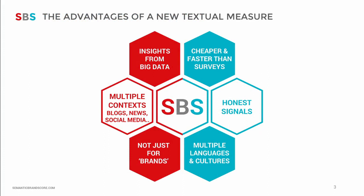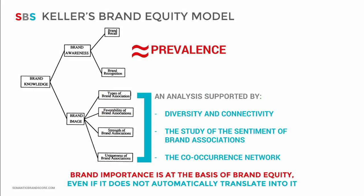This approach has several advantages if compared to traditional metrics and the use of surveys. SBS is a metric of semantic importance that was originally linked to traditional brand equity models. We say that a brand, a concept, or a set of keywords is more important when people are more aware of it. Frequently mentioned keywords, captured with prevalence, serve as a proxy for recall and recognition. Diversity and connectivity are more related to the concept of brand image and help evaluate the type, uniqueness, and strength of textual associations. Here we translate some brand equity constructs for big data analysis.